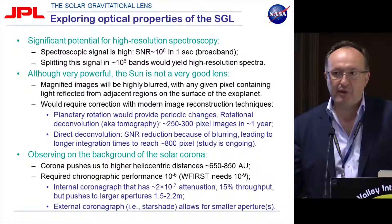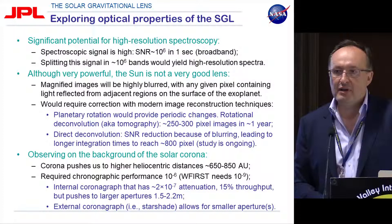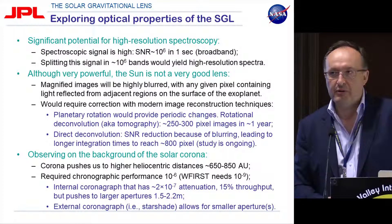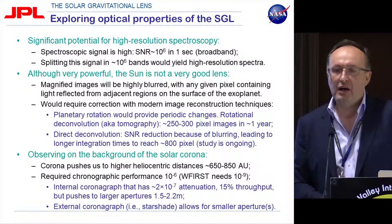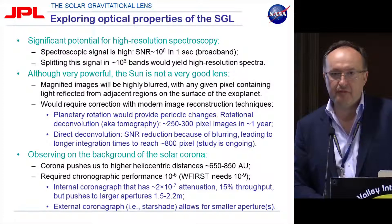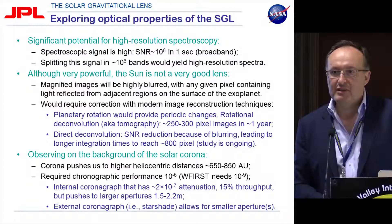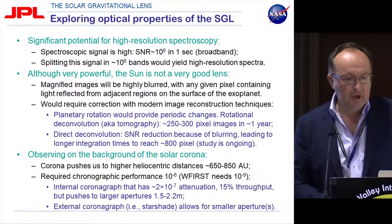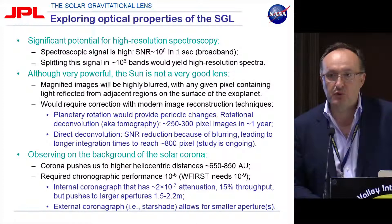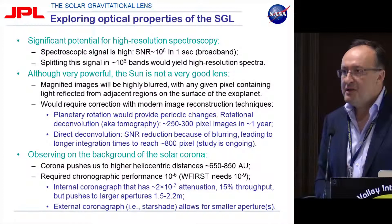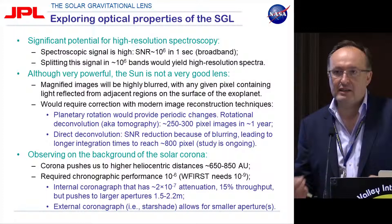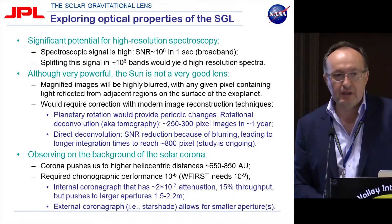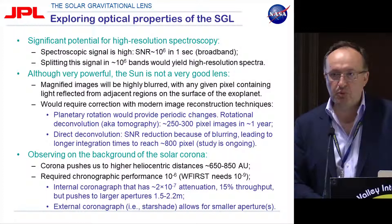Imaging is challenging because of significant blurring. The gravitational lens has very strong spherical aberration, which leads to blurring of the image. One way to address this is rotational tomography. This technique has been developed recently, and using rotational deconvolution we were able to demonstrate that up to 300-pixel images are potentially possible. We'll discuss rotational deconvolution technique further in the afternoon session. With direct deconvolution, we get a significant signal-to-noise ratio reduction, which may result in longer integration times. This study is ongoing and we will share more details in upcoming papers.